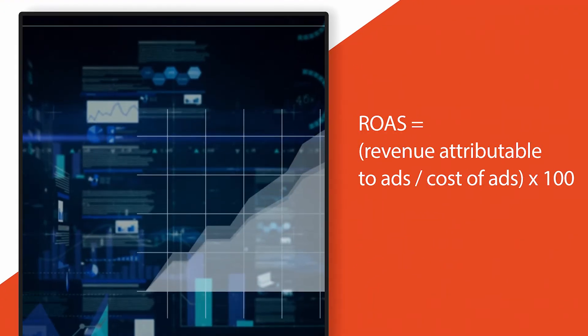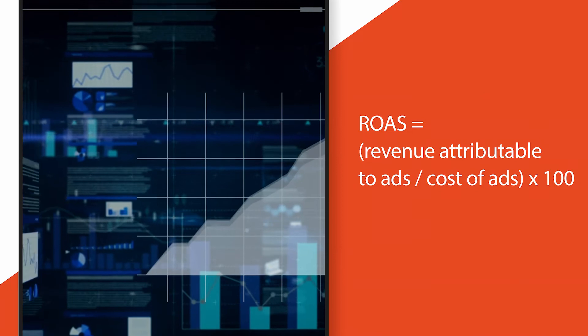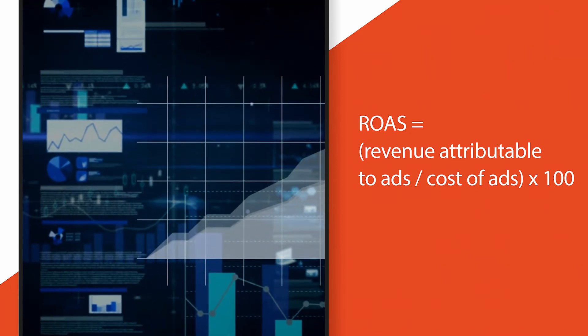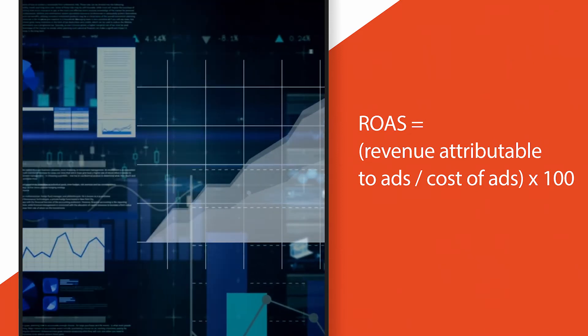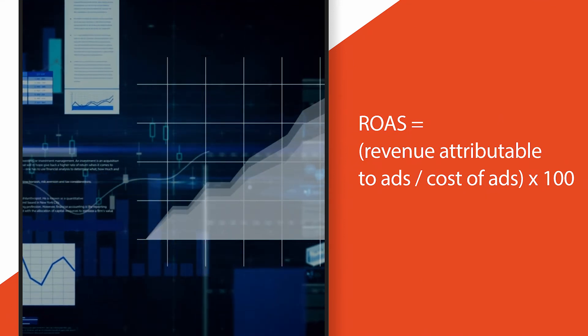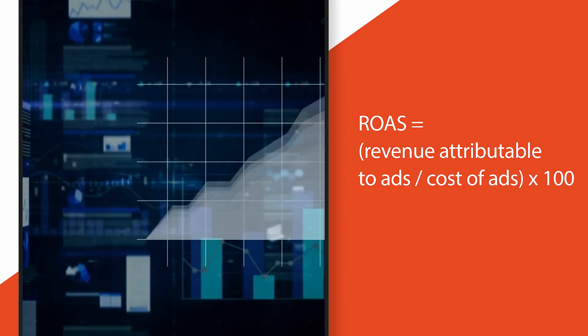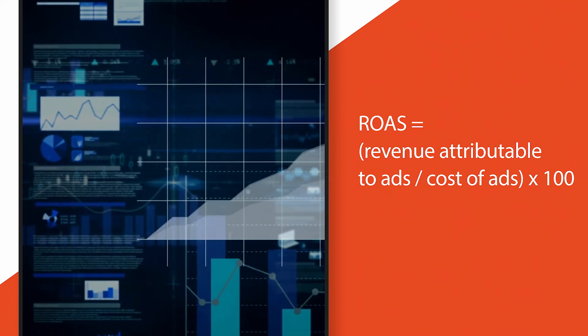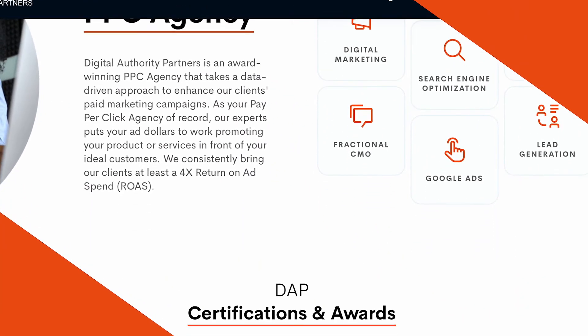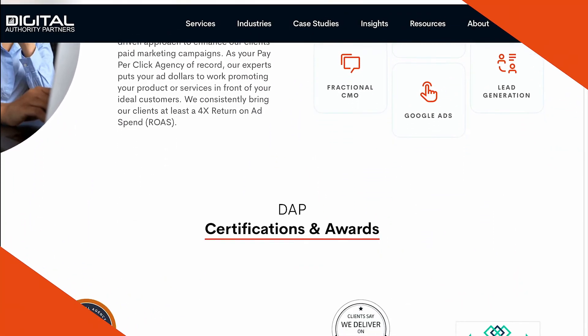And this is called ROAS, a metric used by businesses and agencies to measure the effectiveness of a paid marketing campaign. As a general rule, a ROAS of 3 is considered very good. A 5 to 10 ROAS is phenomenal, and phenomenal is what you should expect by working with Digital Authority Partners.